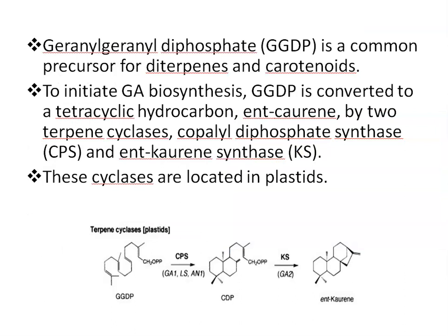First, geranylgeranyl diphosphate (GGDP) is a common precursor for diterpenes and carotenoids — and gibberellin is a diterpene. To initiate gibberellin biosynthesis, this GGDP is converted to a tetracyclic hydrocarbon ent-kaurene by two terpene cyclase enzymes: CPS (copalyl diphosphate synthase) and KS (ent-kaurene synthase). These enzymes are located in plastids.